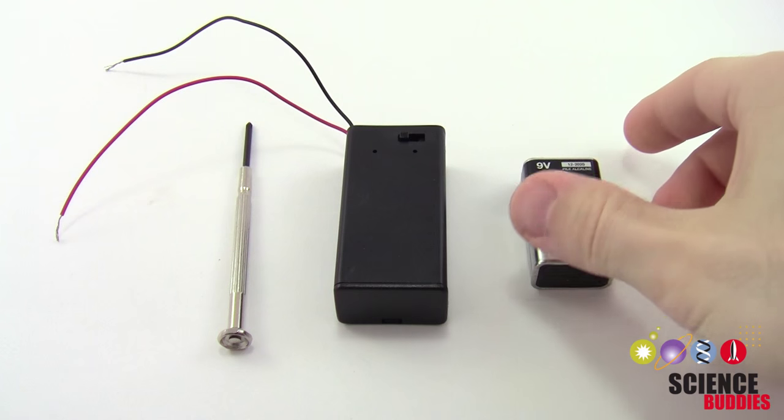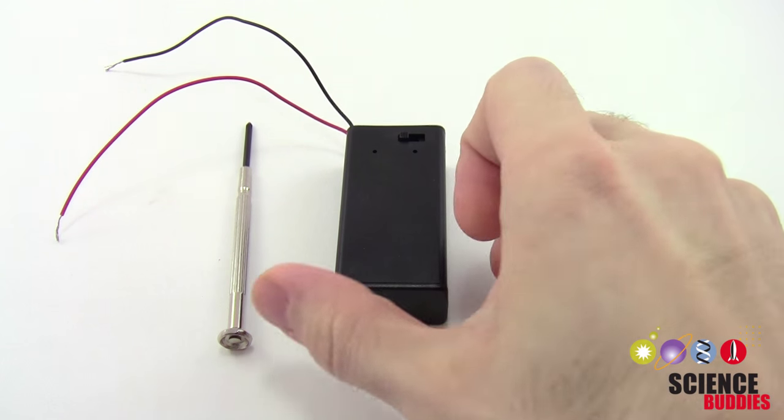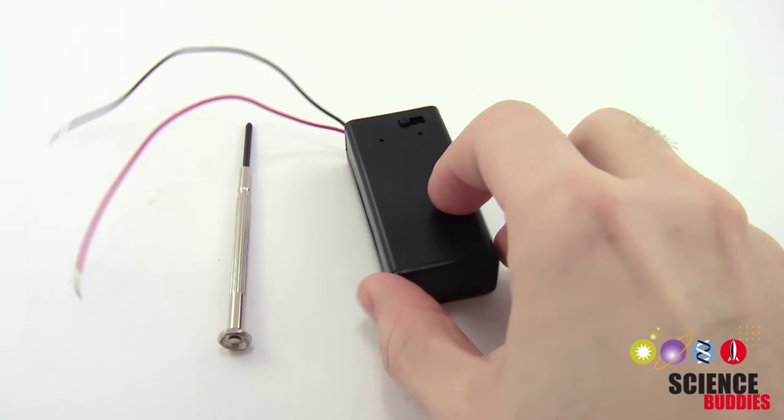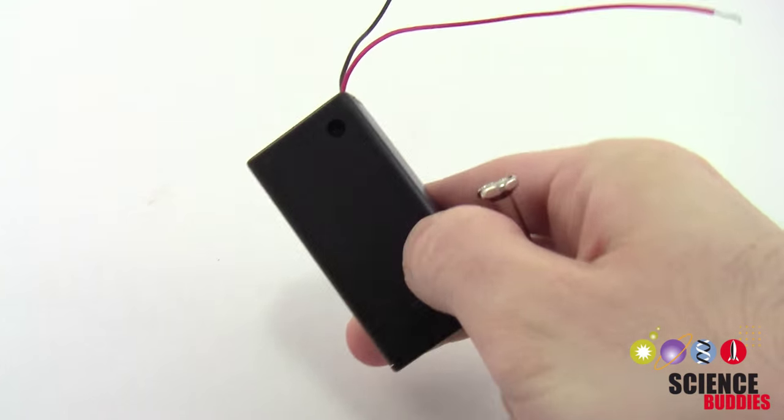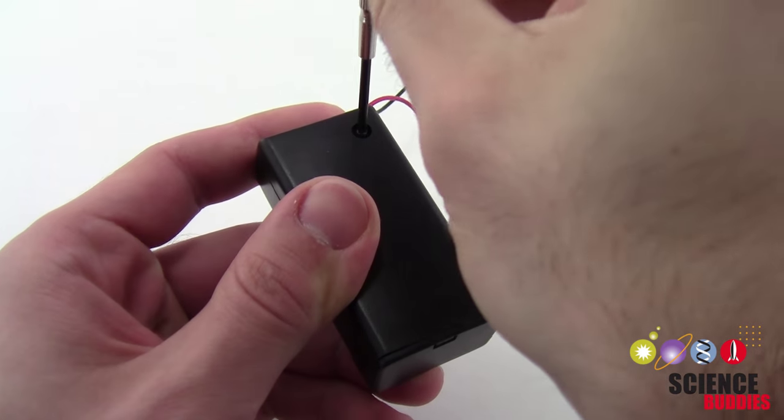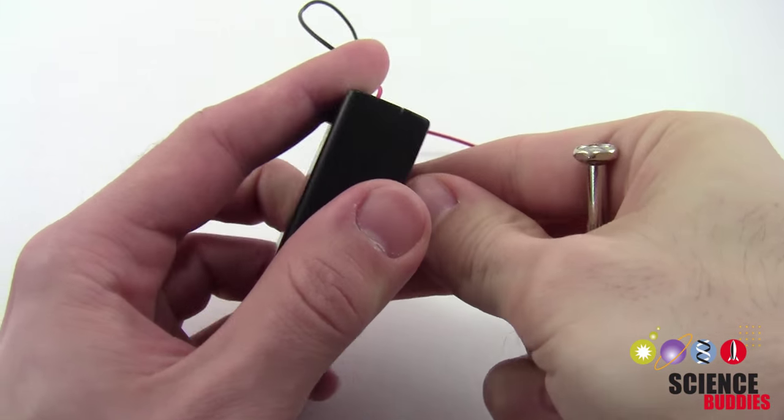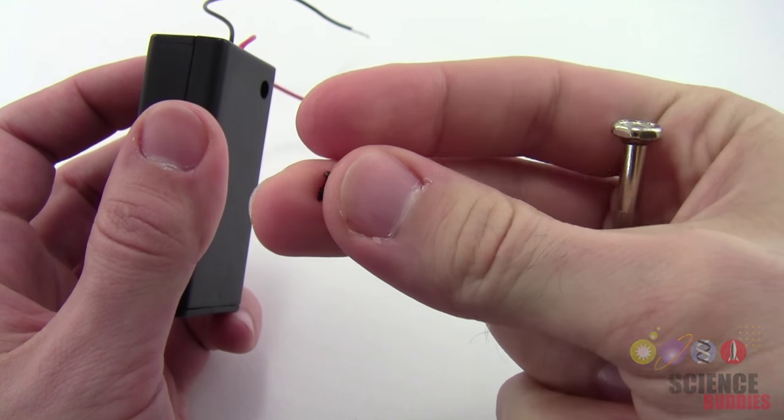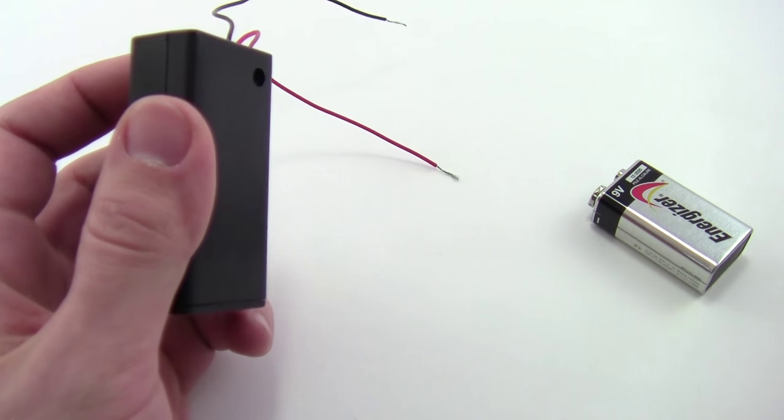This video will show you how to put the 9-volt battery into the battery holder. Your holder might have a small Phillips head screw holding the lid on, so use a tiny screwdriver to remove that screw. You can put the screw aside because you don't really need it to hold the lid on.